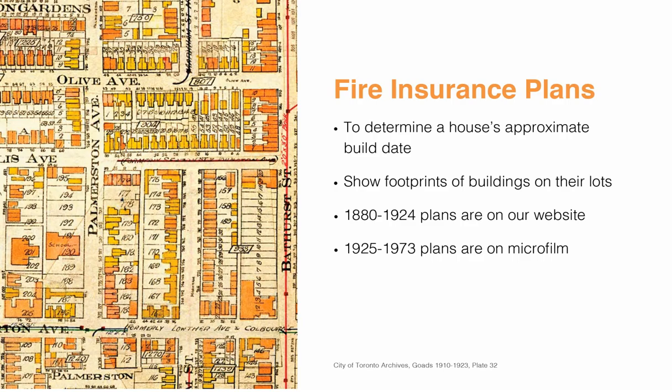Let's start off with the fire insurance plans, which can help determine the approximate date a house was built. These plans, which show the footprint of buildings, were created for insurance companies so that they could determine the materials used to construct buildings, which ultimately helped them prepare insurance quotes for their customers. The archives has fire insurance plans from 1880 to 1973. The plans between 1880 and 1924 are digitized and available on our website, while the rest are on microfilm and can be viewed here at the archives.